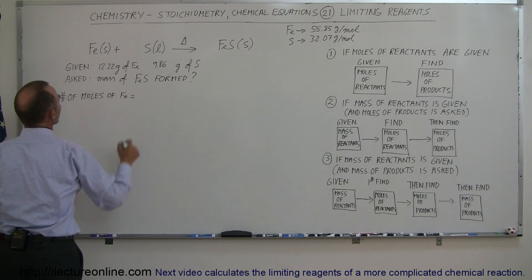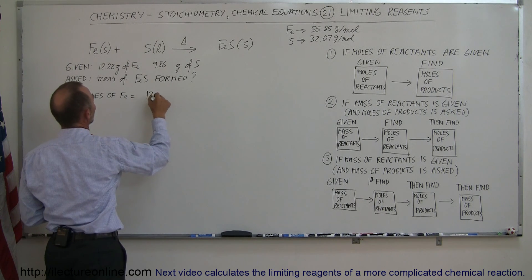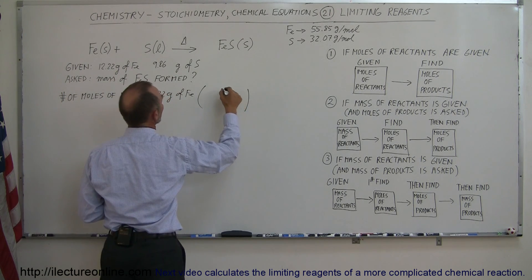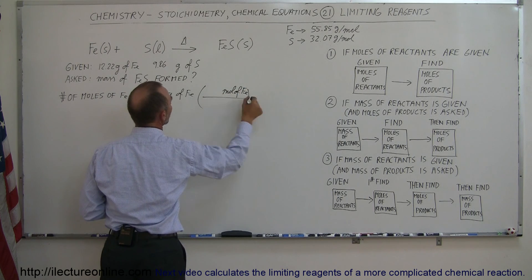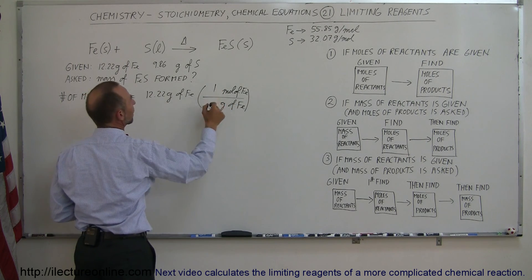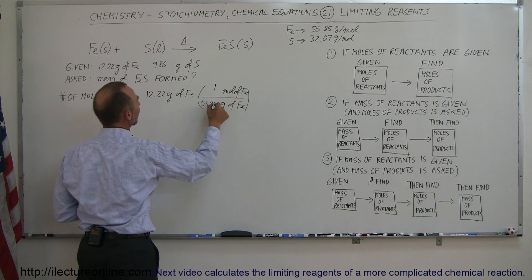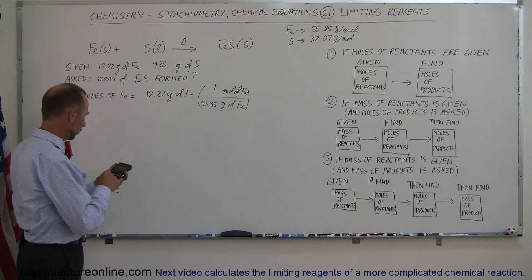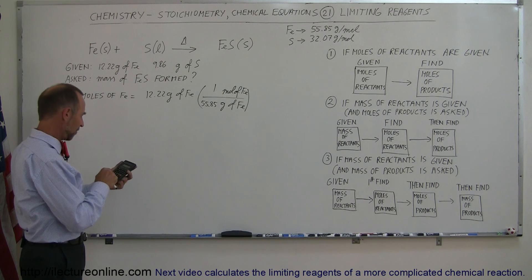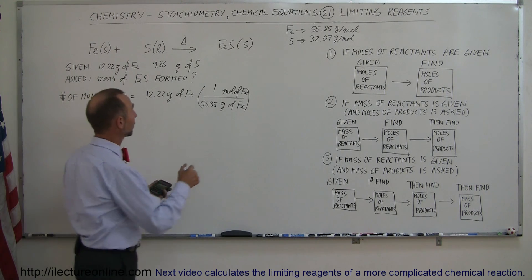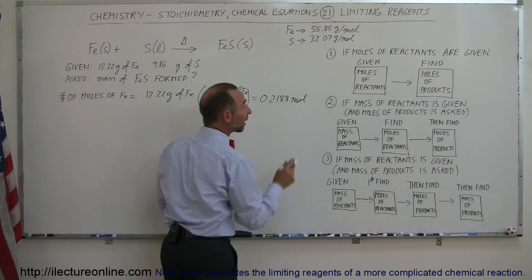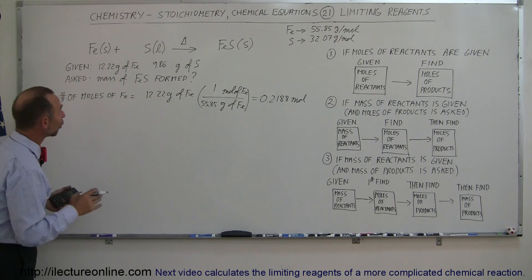The number of moles of iron equals the mass of iron times the ratio of moles to molar mass. So we take 12.22 grams of iron and divide by 55.85 grams per mole — one mole of iron has a mass of 55.85 grams. We get 12.22 divided by 55.85, which equals 0.2188 moles of iron.